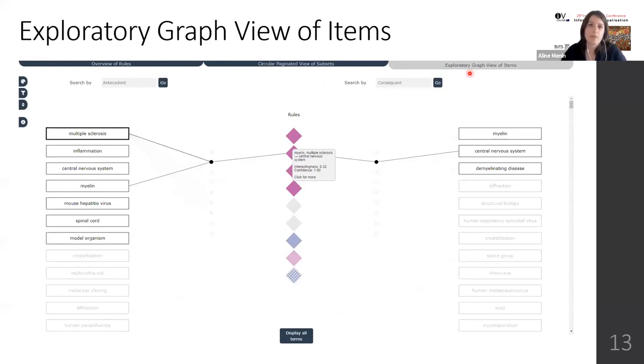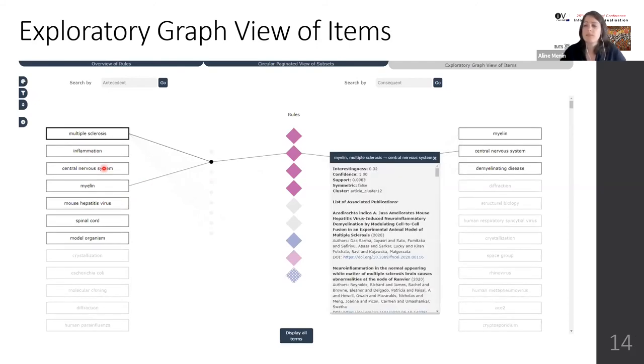The exploratory graph view of items supports the resolution of item-based tasks. It shows the list of antecedent items on the left side of the screen and consequent items on the right side. The user can then select an item of interest, such as multiple sclerosis, and the system will show the association rules in the form of diamonds in the center of the screen and highlight the other items that are involved in those rules. Similar to the circular view, we can click on a diamond and that will show the list of associated publications and detailed information describing the measures of interest of that rule.